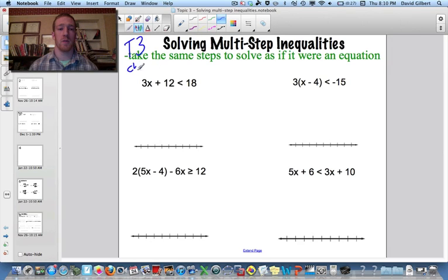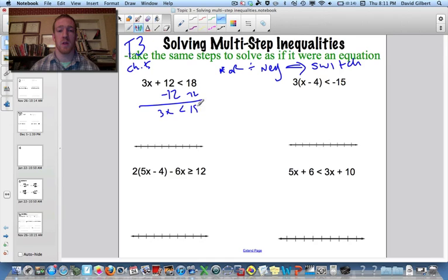Alright, topic 3 of chapter 5, solving multi-step inequalities. It's just like solving a multi-step equation, only in this case it's an inequality. So instead of finding a single number, we're going to be graphing the arrow thing. And if we multiply or divide by a negative, then we have to switch the inequality. So don't forget that from the last video. Sweet, so here, minus 12 gives us 3x is less than 6. So I divide both sides by 3 and we get x is less than 2. Points that way.